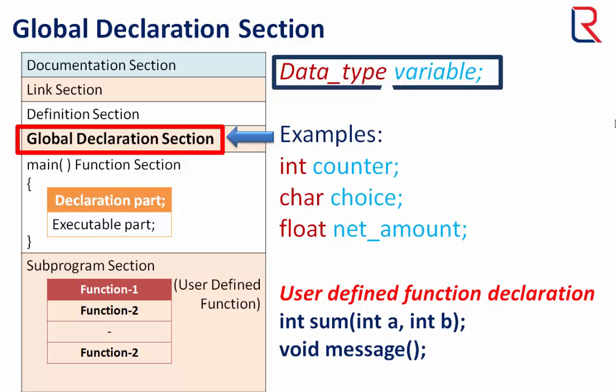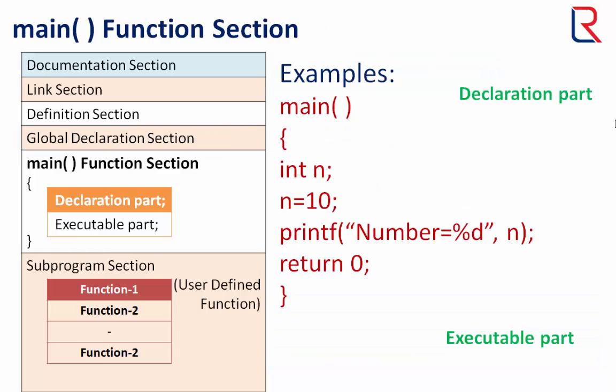Now time to main function section. Every C program must have one main function section. This section contains two parts: declaration part and executable part. The declaration part declares all the variables used in the executable part.